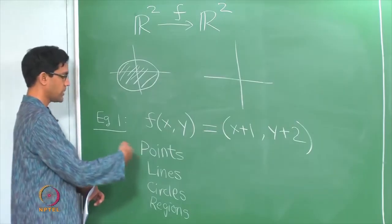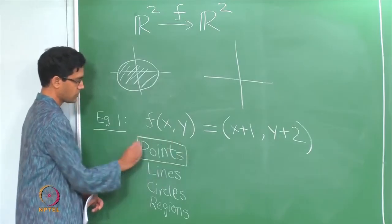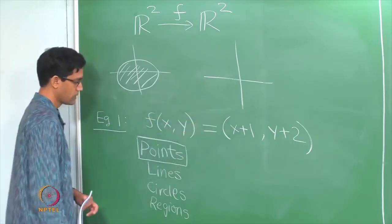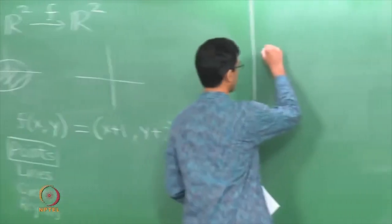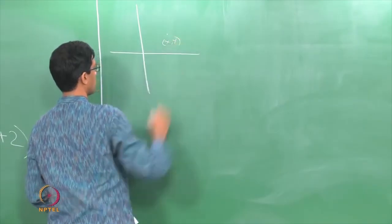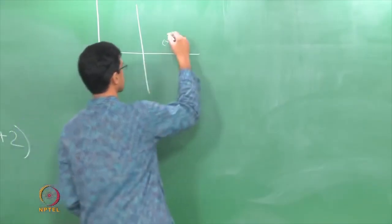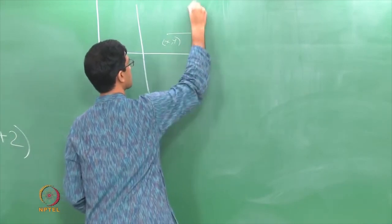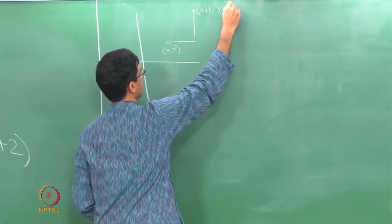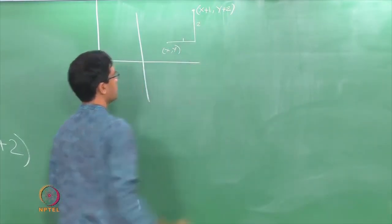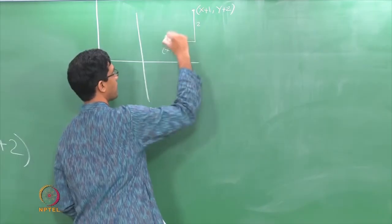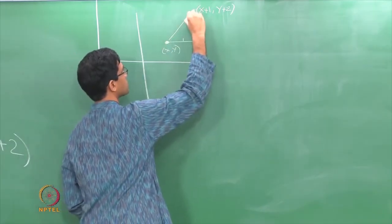At the very basic level, what you are given is how a function acts on a point (x, y) to produce another point. So let us first think of what this function does to a typical point in R². We have the point (x, y); here is the point 1 unit to the right and 2 units above the point (x, y). What this function does is take this point (x, y) and move it or map it to this new point.